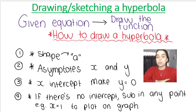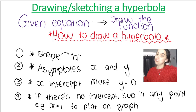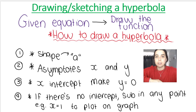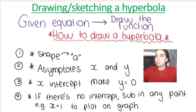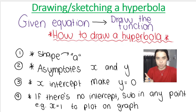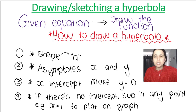This is when I give you the equation of the function and you need to draw it. On the side you can see the steps I've laid out in order to draw the function. First, we look at the 'a' value, which is the value in the numerator of the fraction. Remember, hyperbolas involve dividing by x, so the numerator tells us about the shape — whether it's positive or negative tells us which quadrants the graph will be in. Then we draw in the asymptotes — the horizontal and vertical asymptotes.